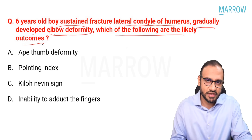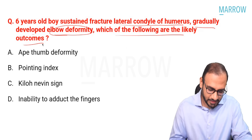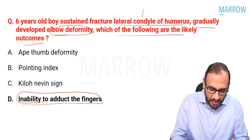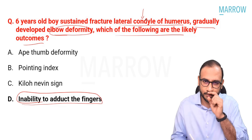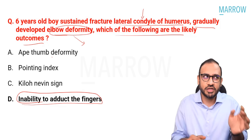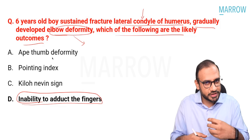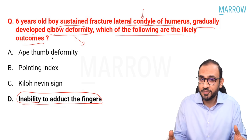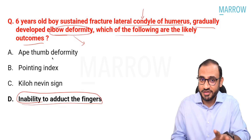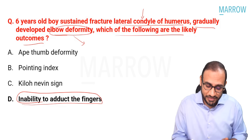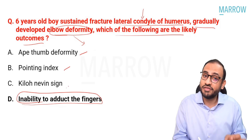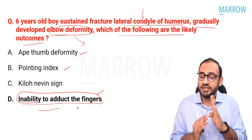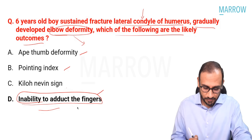Question three is a repeat from a previous INI CET. The examiner describes a patient with a lateral condyle humerus fracture who gradually develops an elbow deformity. The lateral condyle does not grow, so the medial condyle grows beyond normal capacity, causing cubitus valgus deformity. Cubitus valgus deformity over time gives tardy ulnar nerve palsy. The question asks about ulnar nerve palsy manifestation. The correct answer is inability to adduct the fingers, because the palmar interossei — which adduct the fingers — are supplied by the ulnar nerve.